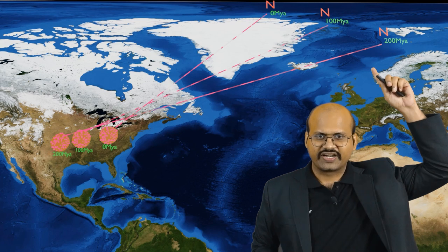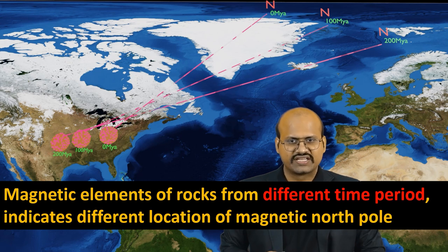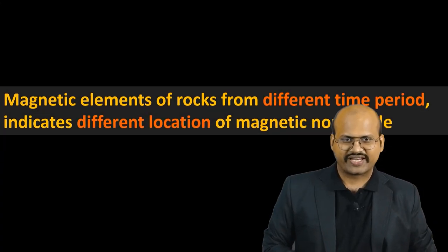But when a rock sample from 100 million years ago was taken, it pointed to a different location of the magnetic north pole. Similarly, when a 200 million year old rock sample was taken, it again pointed in a different direction. Thus, it seemed that the magnetic poles had wandered over time.